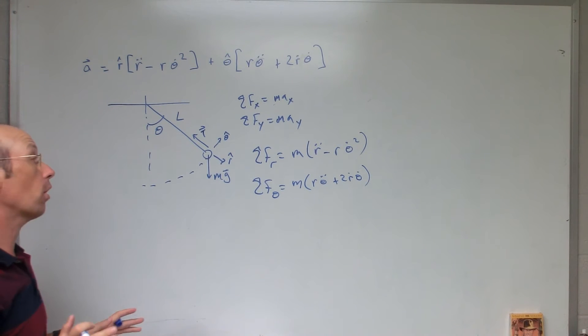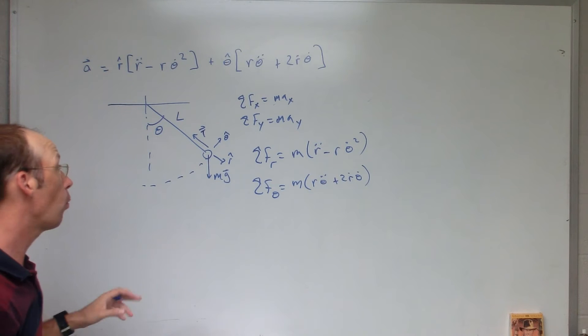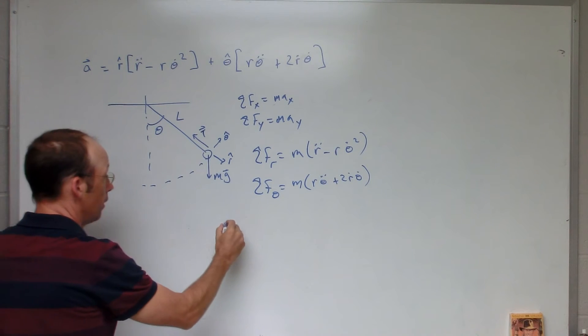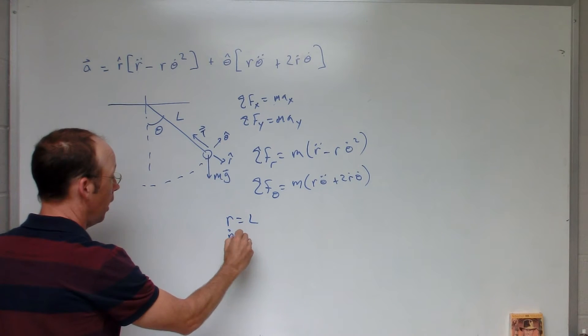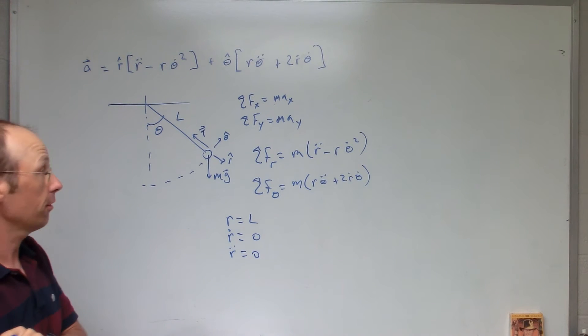Now, before I start putting in things into that equation, and particularly the sum of the forces, I do know one thing. If this is staying in a circle, then r equals L. So r dot is going to be 0, r double dot is equal to 0. So that's going to make things a little bit easier.